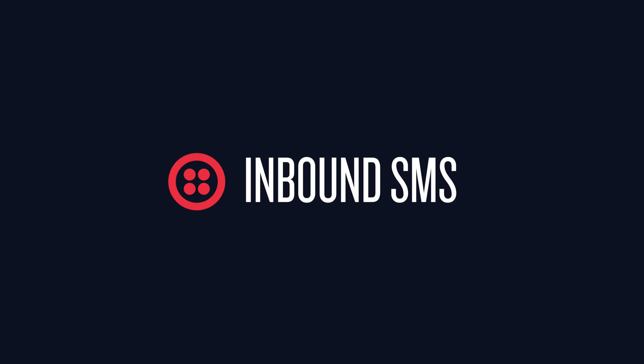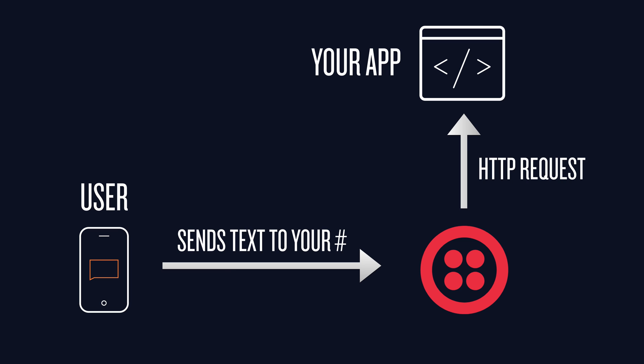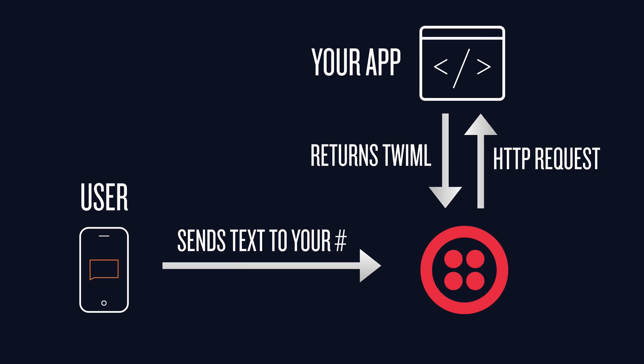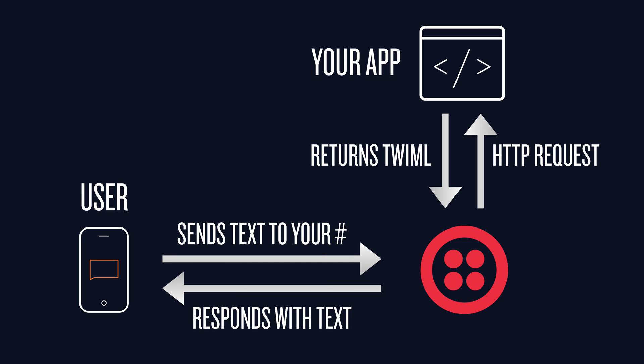Now let's talk about inbound SMS. A user sends a text message to your Twilio phone number. Twilio makes an HTTP request to your app, and your app returns some instructions in the form of something called TwiML. If the TwiML looks like this, then Twilio sends a text message back to the user's phone. Let's write the code to make that happen.